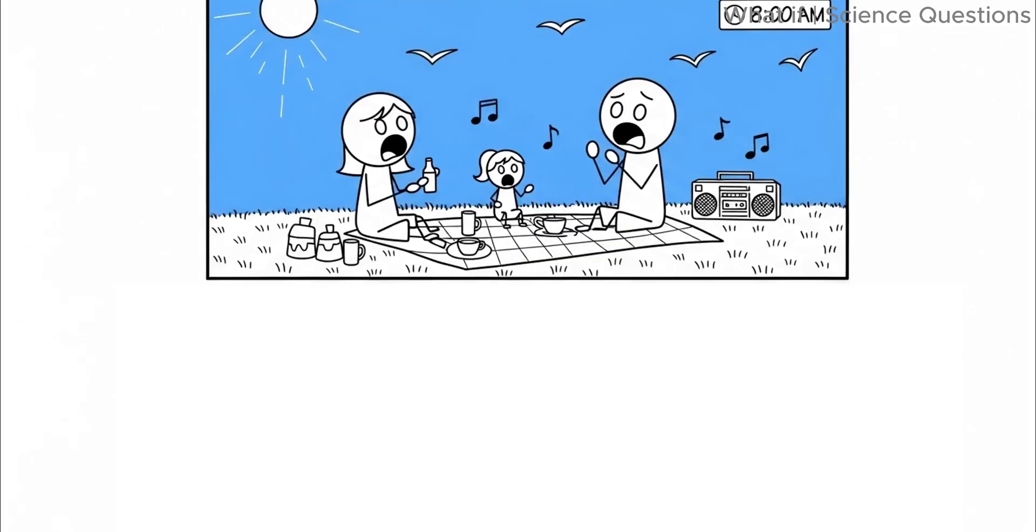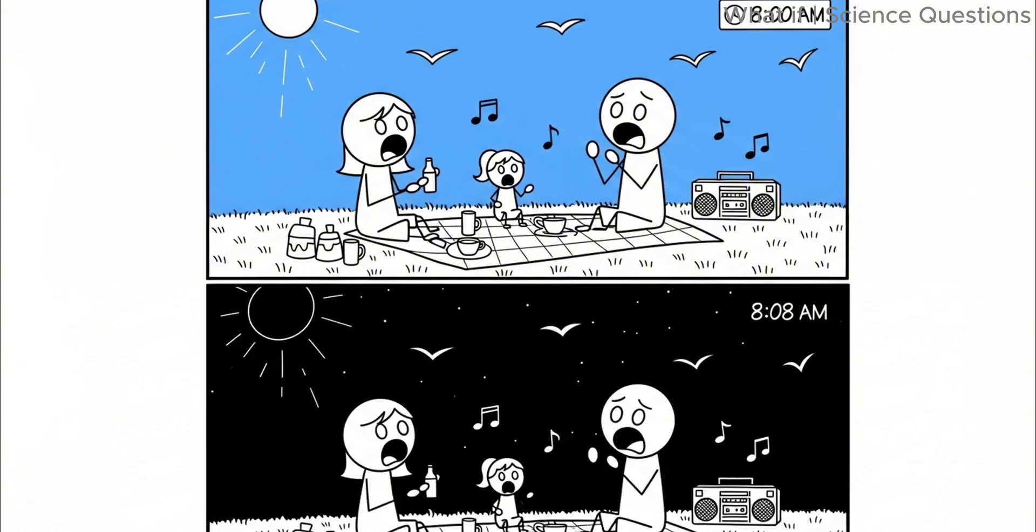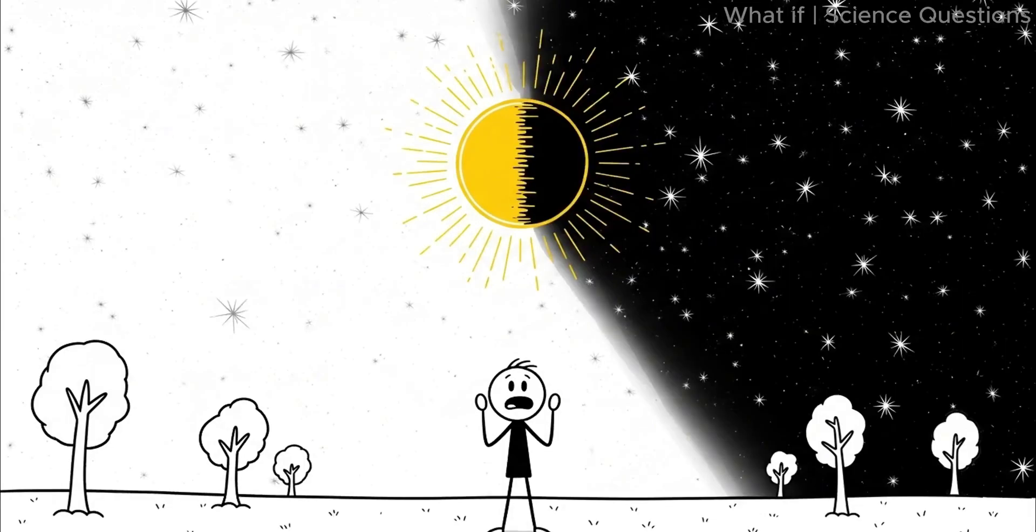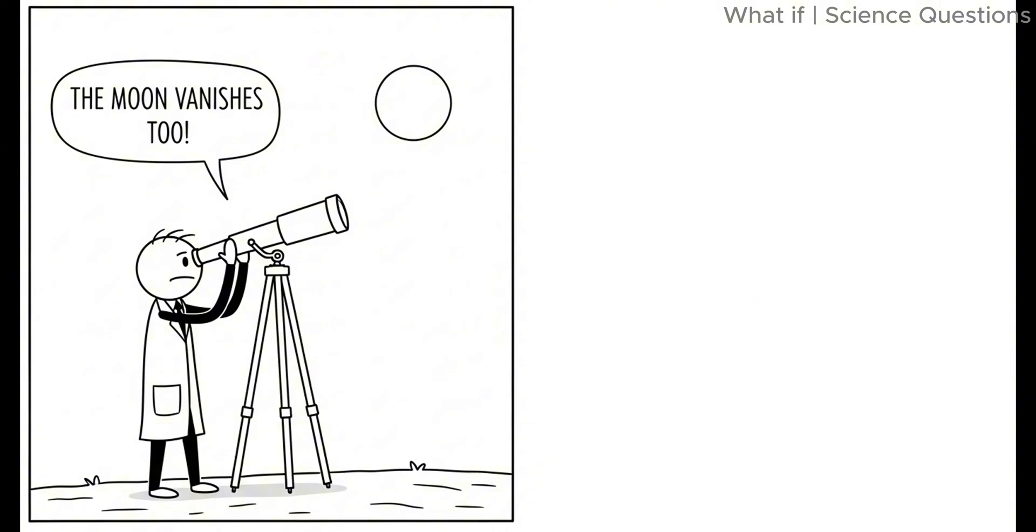For those eight minutes, everything looks normal. Blue skies, warmth, birds chirping. But the moment those eight minutes pass, the sky goes completely black. Day turns into instant night. The moon vanishes too, since it only shines by reflecting sunlight.